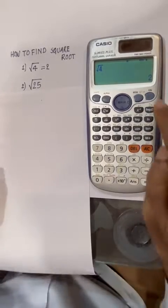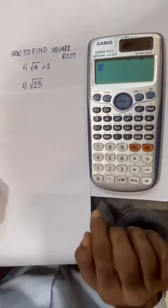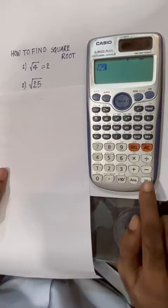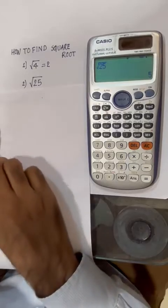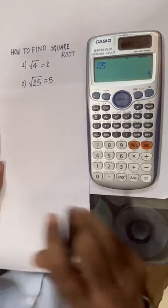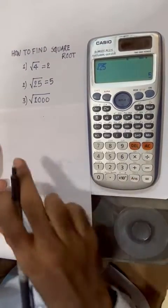Square root of 25. Press the square root symbol, type 25, and press equals. You will get square root of 25 equals 5. Now we'll take a random number.